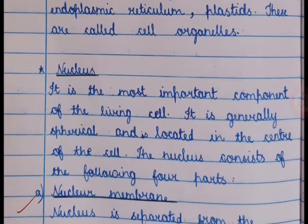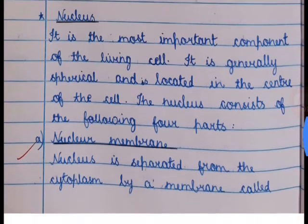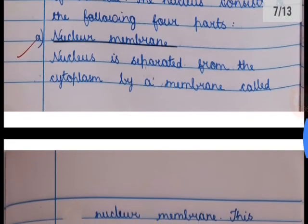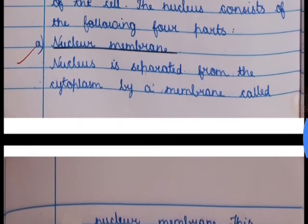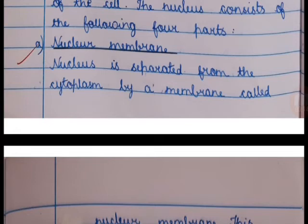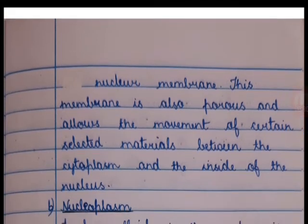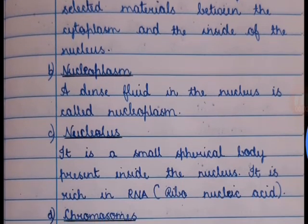Nucleus — it is the most important component of the living cell. It is generally spherical and is located in the center of the cell. The nucleus consists of four parts. Nuclear membrane — nucleus is separated from the cytoplasm by a membrane called nuclear membrane. This membrane is also porous; it allows the movement of certain selected materials between the cytoplasm and the inside of the nucleus. A dense fluid in the nucleus is called nucleoplasm.